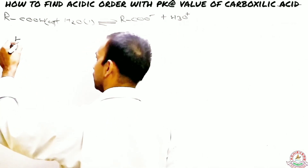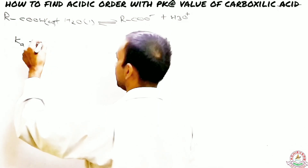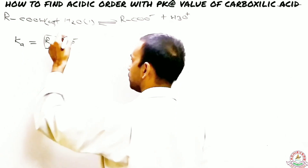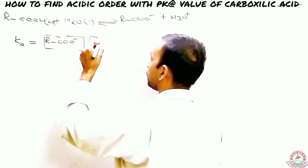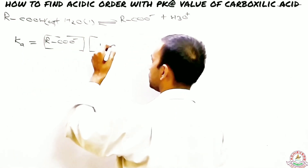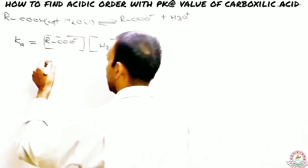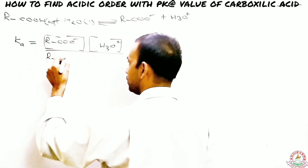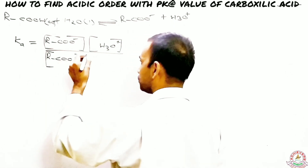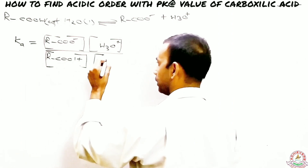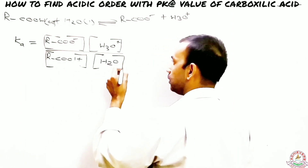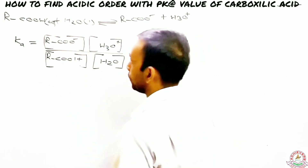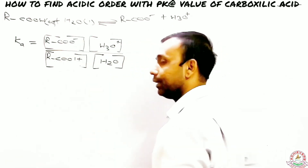Before getting to pKa, we need to find the equilibrium constant K. K is calculated as the concentration of RCOO⁻ multiplied by the hydronium ion concentration, divided by the concentration of the carboxylic acid RCOOH, with water also present on the reactant side. This is the expression for K.